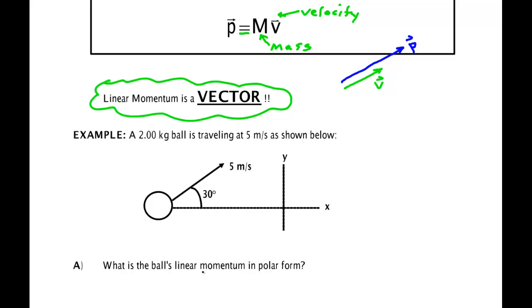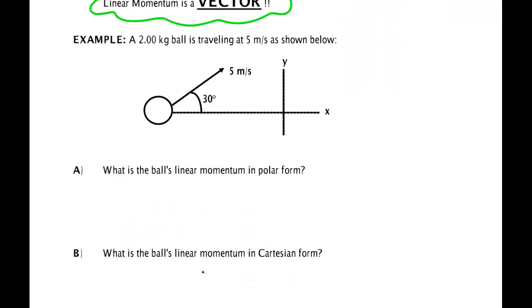What is the ball's linear momentum in polar form? Well, multiplication of a vector by a scalar is easy in polar form. P is equal to 2.00 kilograms, that's the scalar, and the vector here is 5 meters per second at an angle of 30 degrees. Multiply those together you get 10.0 kilogram meter per second at an angle of 30 degrees. So all it did was double the length of the vector.